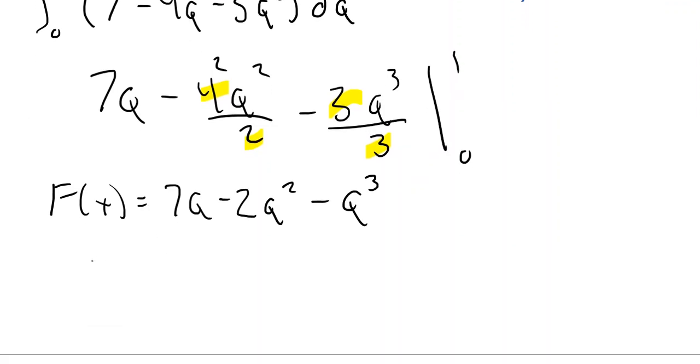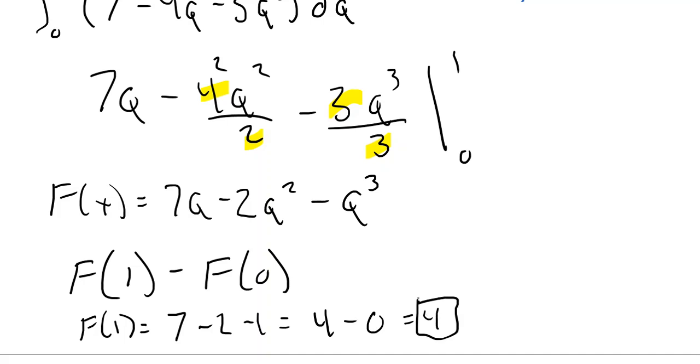And then we're simply going to evaluate at F(1) minus F(0). And when you do that, that would be simple enough to just do by hand. When you put 1 in all of these, F(1) is going to be 7 times 1 is 7, 1 squared is 1 minus 2 minus 1. So that's going to be 7 minus 3, which is 4. And then putting 0 in for all of these, you're going to get 0, so 4. So the total gains from trade is 4. And that is basically how you do gains from trade problems.